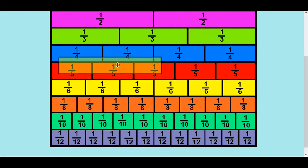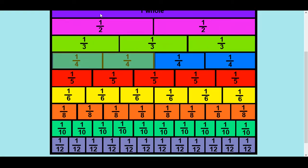What you notice, actually, in each case of these equivalent fractions, is that the top number is half the bottom number. So one over two — one is half of two. If it's two over four, two is half of four, and so on.